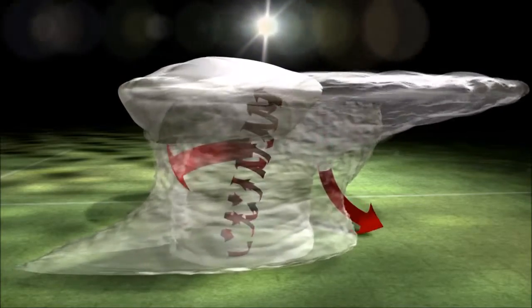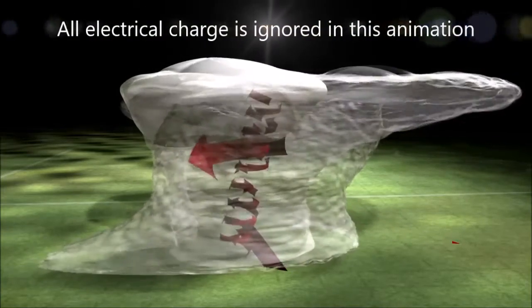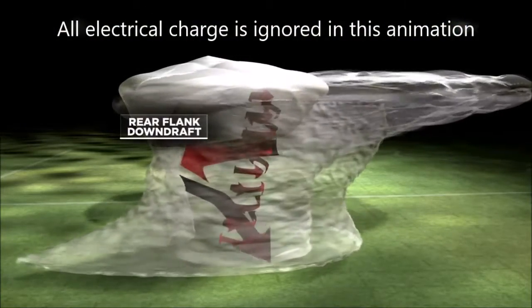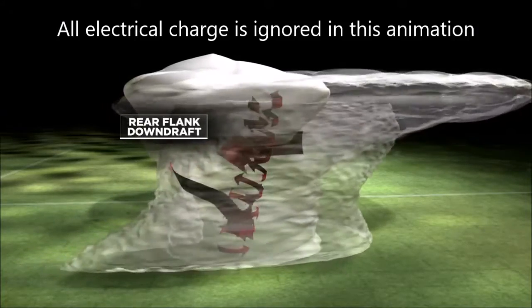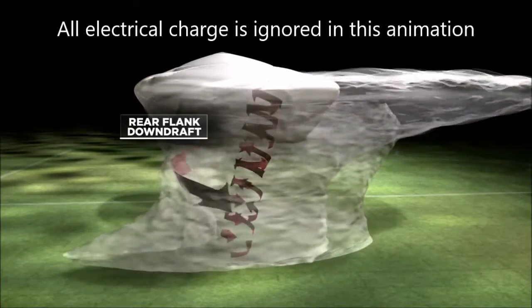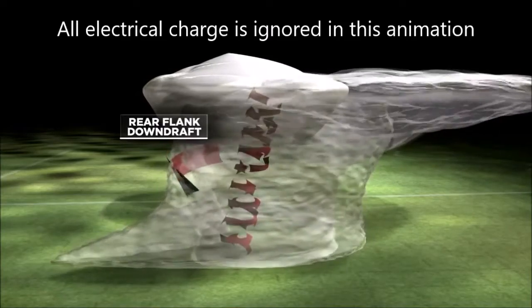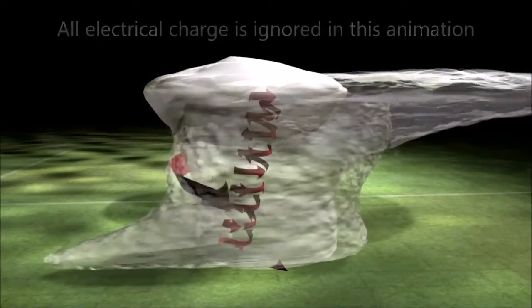Supercells also have strong downdrafts and one of them, called a rear flank downdraft, or RFD, is of particular interest to scientists. They believe that as the RFD wraps around the mesocyclone and descends, it helps intensify rotation at the surface, causing a tornado, a twisting column of air extending below the supercell.